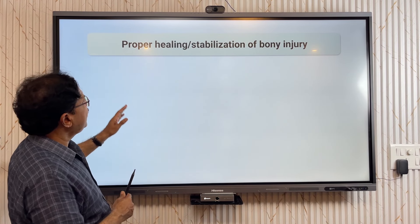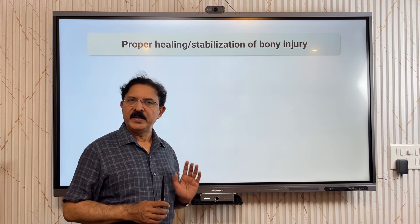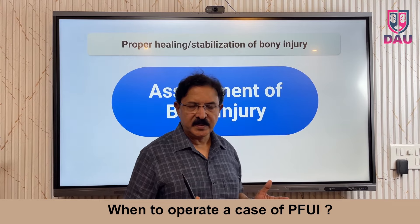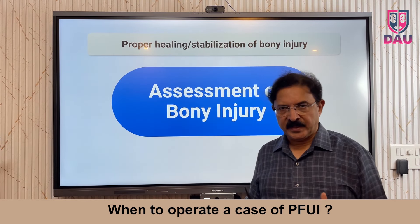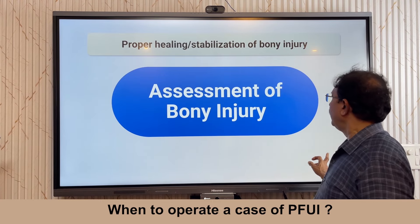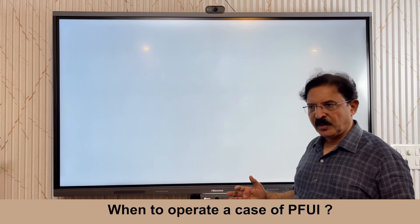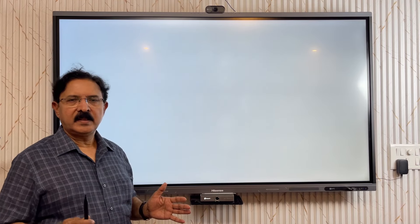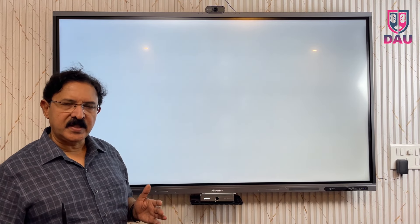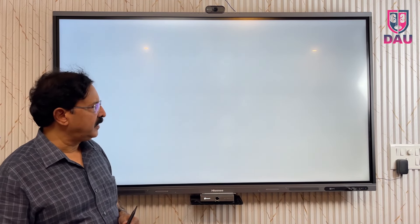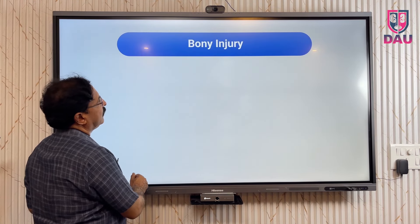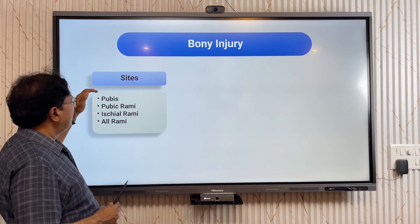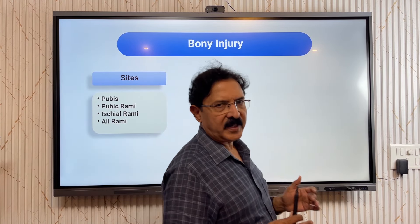The first factor is proper healing and stabilization of the bone injury. To assess this you must evaluate the bone injury the patient has sustained. This is done by a plain X-ray of the pelvis or a 3D CT scan of the pelvis — the 3D CT scan is better but since it is expensive, you can still do a lot with a plain X-ray. First, identify the sites in the pelvis where the fracture has taken place.